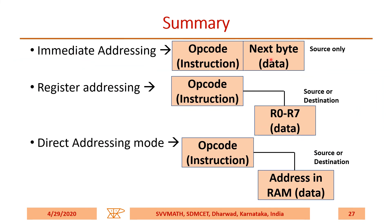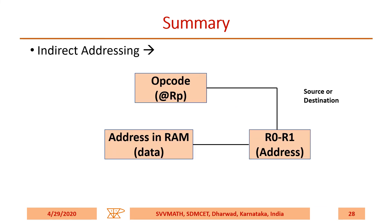In immediate addressing mode, the next byte itself is the source — it is a part of the instruction. In register addressing mode, the operand (source or destination) will be a register. In direct addressing mode, the operand will be an address, and at that address you will find the data. In indirect addressing mode, the opcode is followed by a register — that register is not data but a pointer or address. When you go to that address, there you will find the data.